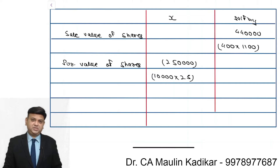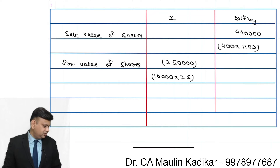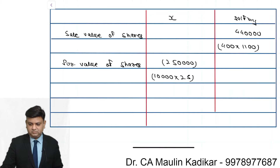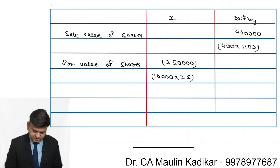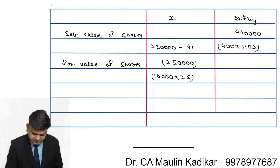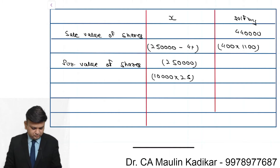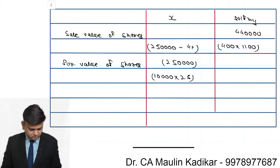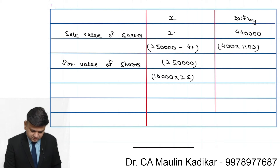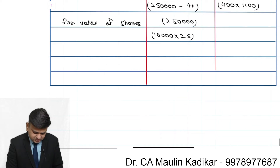These are the two fixed transactions. On the next day we need to reverse them. The shares which were purchased now need to be sold. The sale price has fallen by 4%, so 2,50,000 minus 4% comes to 2,40,000. So that is a loss. The amount of the loss is rupees 10,000.